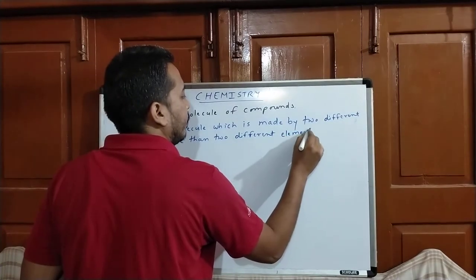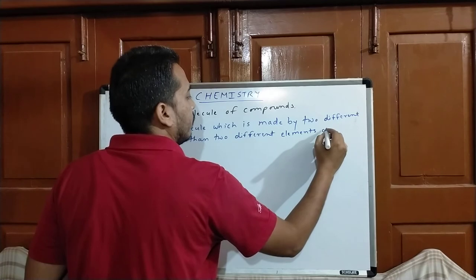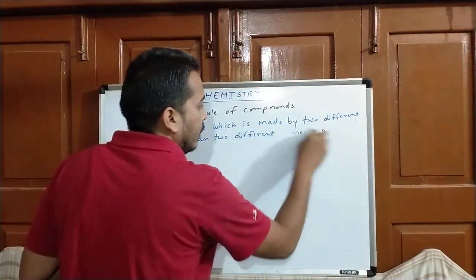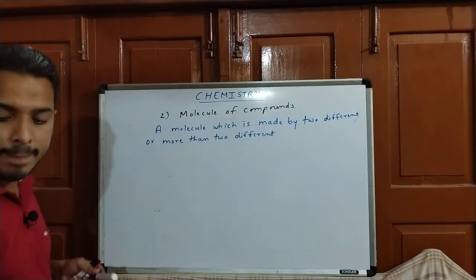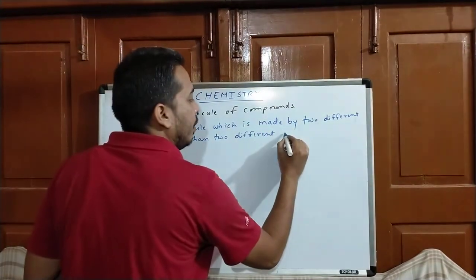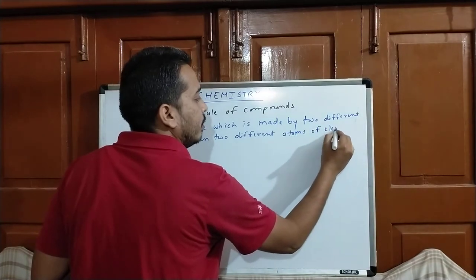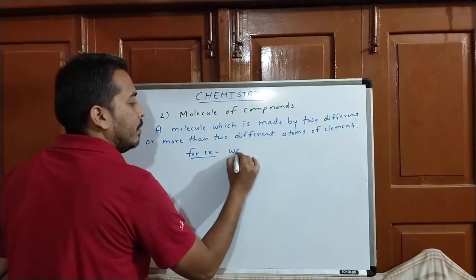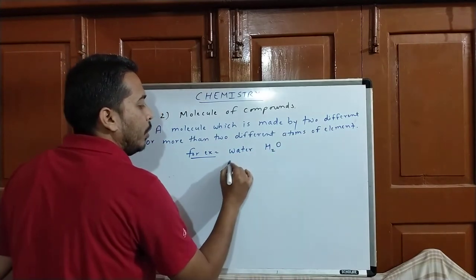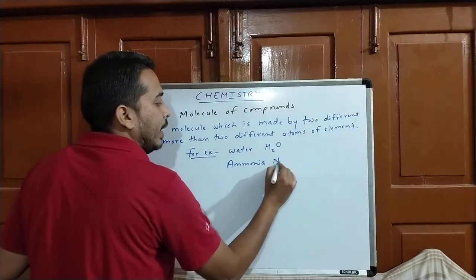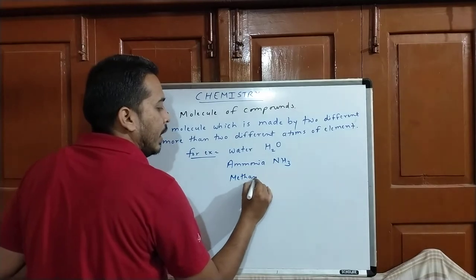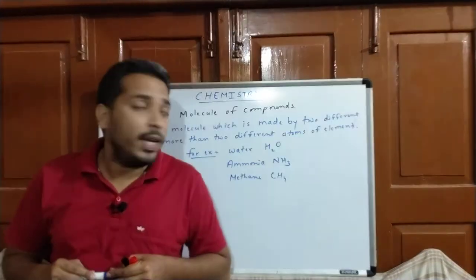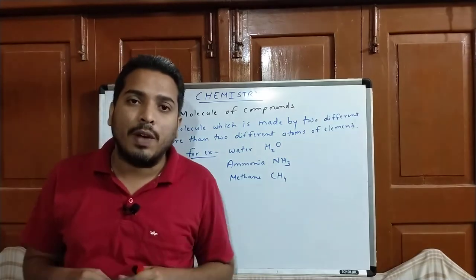We have to write atoms of elements — two different atoms of elements. For example, water, formula H2O; ammonia, formula NH3; methane, formula CH4. This is a molecule of compound — a molecule which is made by two different or more than two different atoms of elements, meaning two or more elements are present.